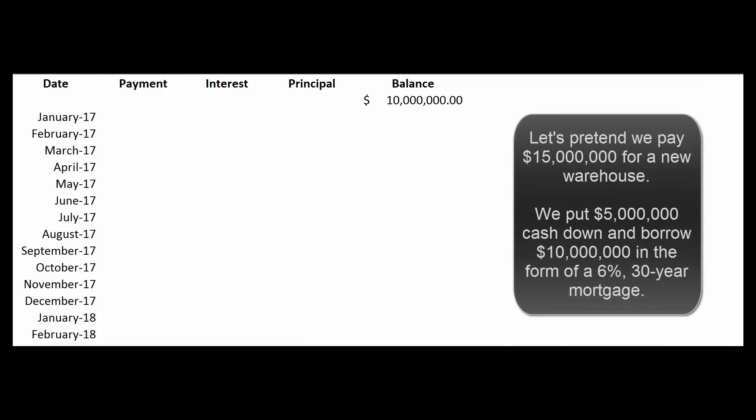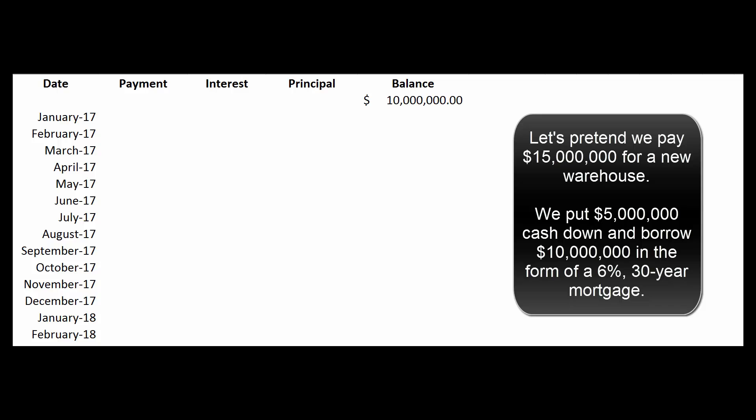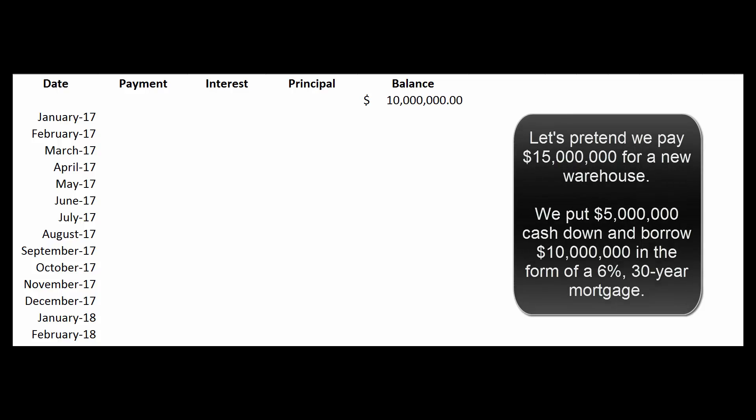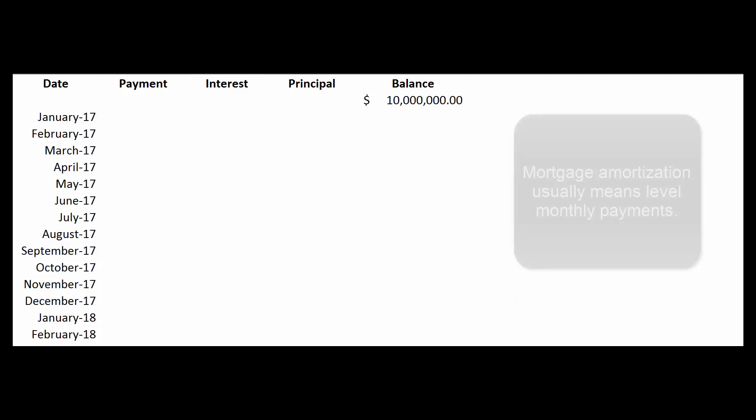Let's pretend that we buy a new warehouse and we pay $15 million for it. We put $5 million down and we finance the other $10 million with a 6%, 30-year mortgage. So let's create an amortization schedule for that mortgage.